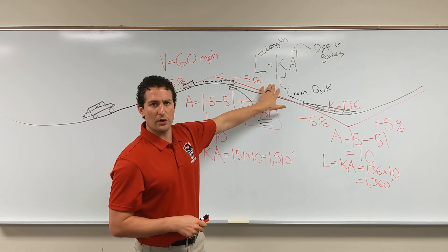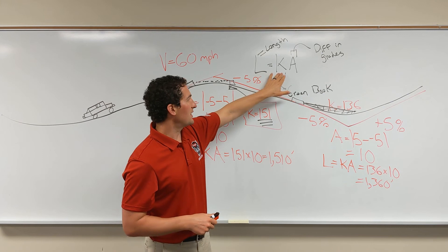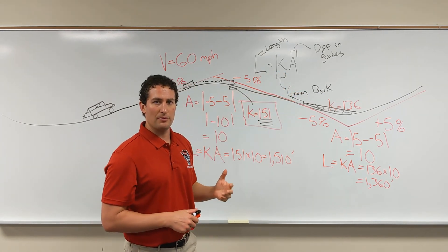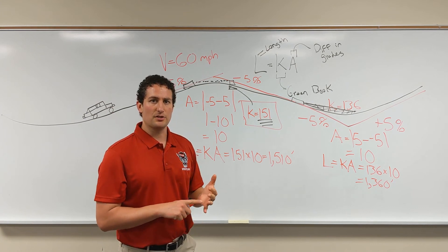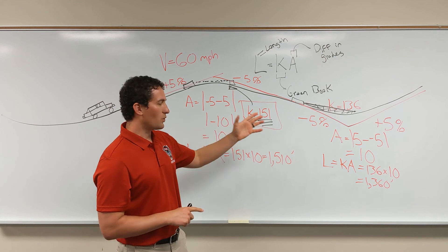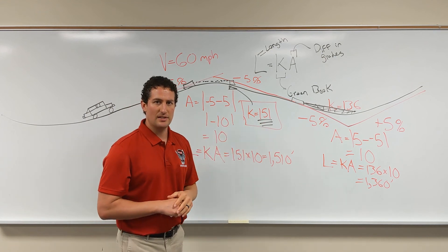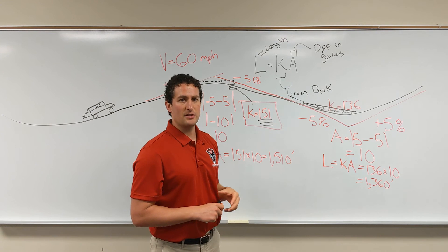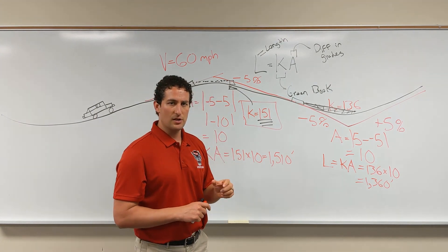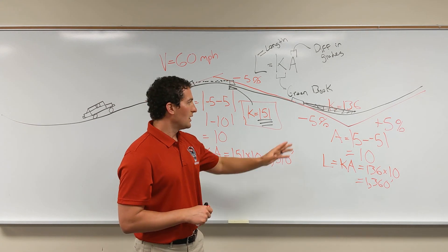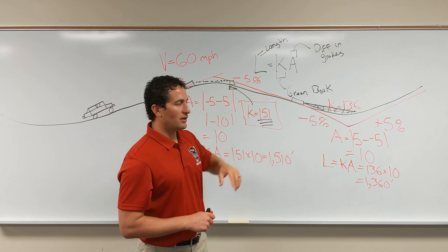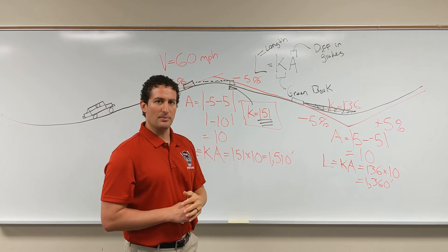Everything ties back in vertical curves with this simple equation, L equals K times A. K is the rate of vertical curvature. We're going to look that up from the green book for different stopping sight distance or passing sight distance, whether it's a crest or a sag, and then the associated design speed. And then A is also specific to each curve. That's the algebraic difference in grades. We're going to subtract those two grades, the entrance and the exit grade, for each vertical curve, and use our equation L equals K times A to find that minimum length of curve.